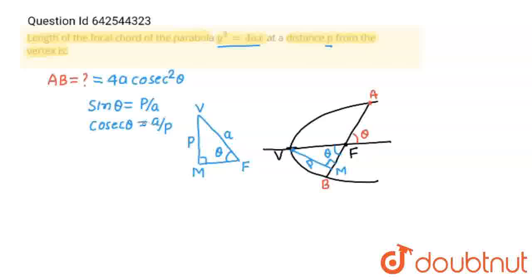Now I am going to put this cosec theta a upon p. So AB length will equal 4a times a upon p, the whole squared. And this will be 4a cubed upon p squared. And this is our final answer. Thank you, students.